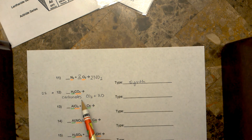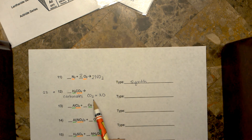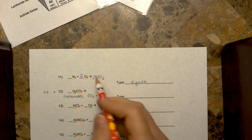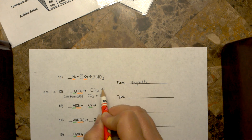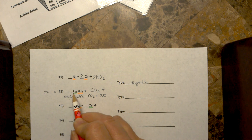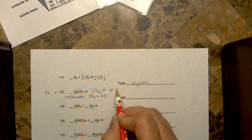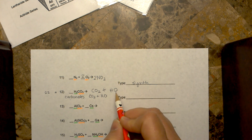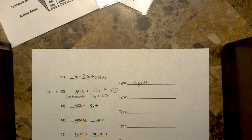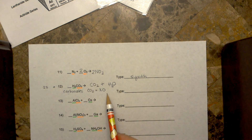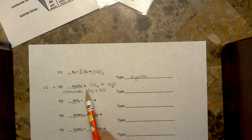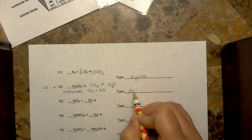Carbonates will break up into carbon dioxide and then the metal compound or the cation. So if you go ahead and put your CO₂ here, your hydrogen with oxygen is going to be H₂O — water. So you end up with that, and when you balance it, it looks like it's all balanced. This is a decomposition.